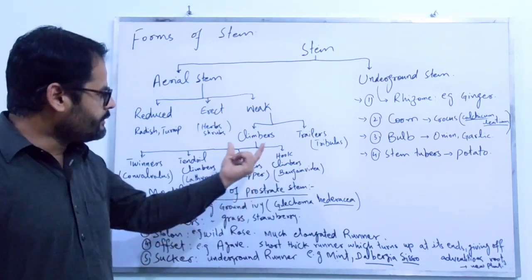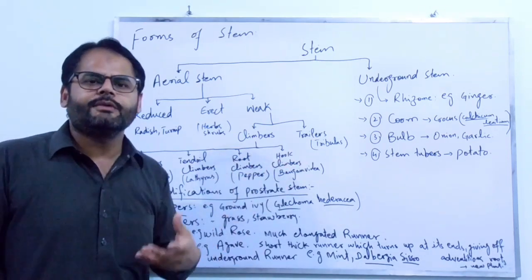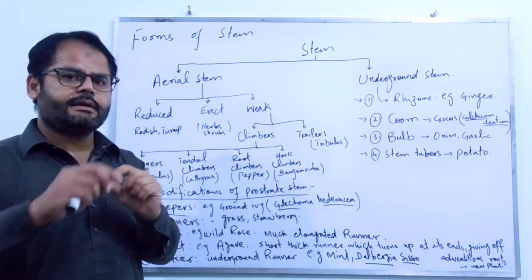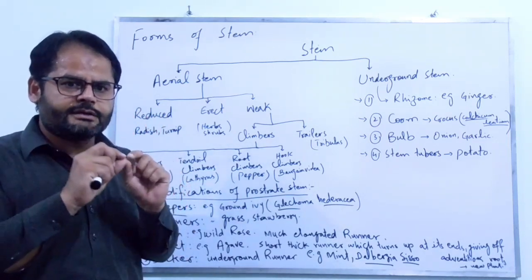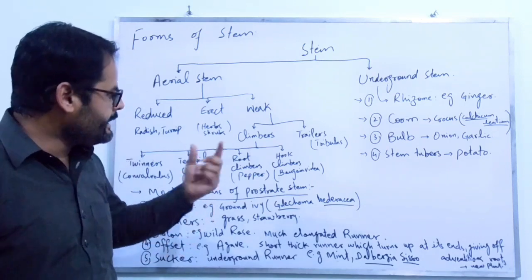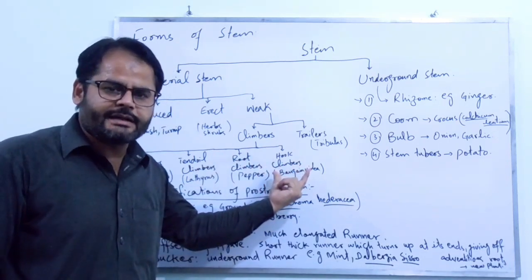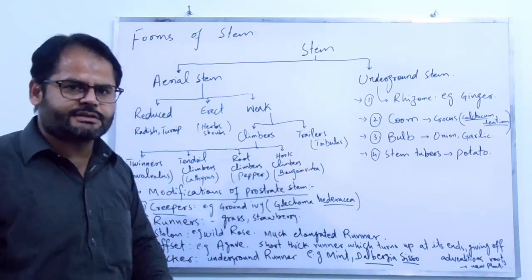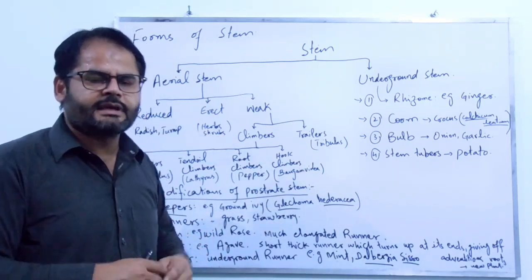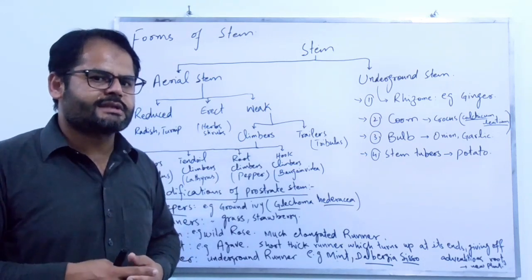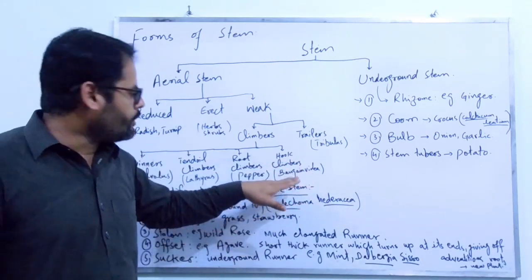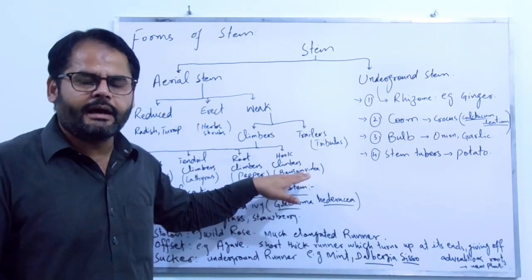The fourth category is called hook climbers. Hook climbers have certain structures in the form of spines, and those spines are bent to one side. Due to those hook-like structures, these plants grow upon certain surfaces and expose themselves to sunlight and other environmental conditions. The familiar example of hook climbers is Bougainvillea glabra.